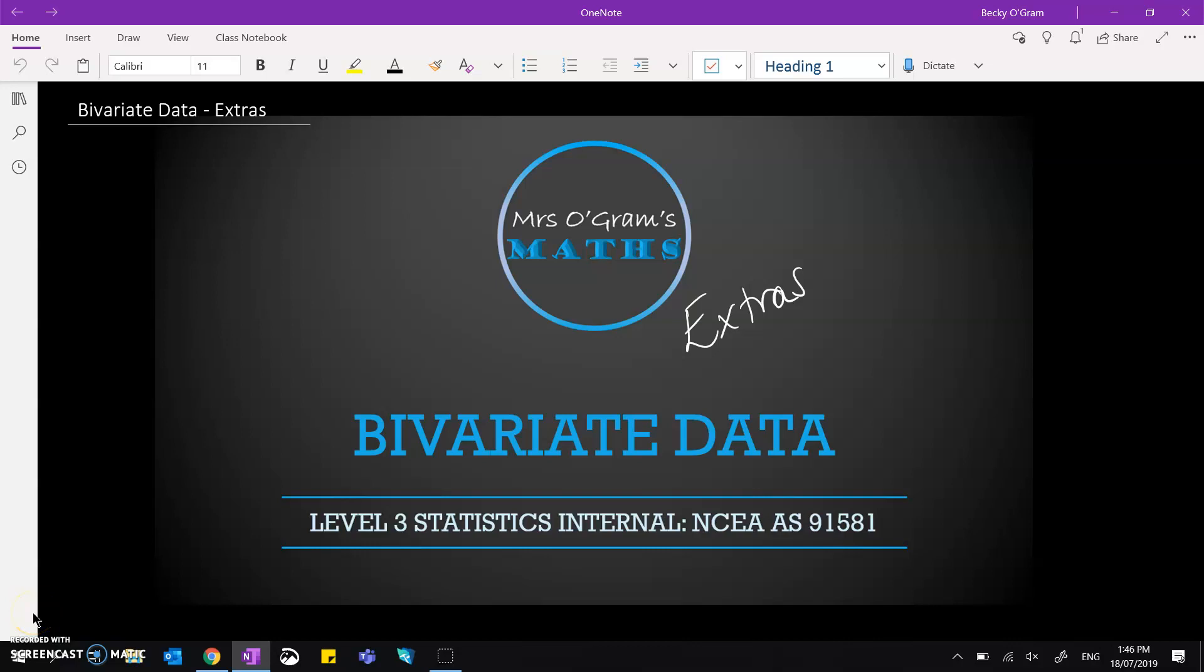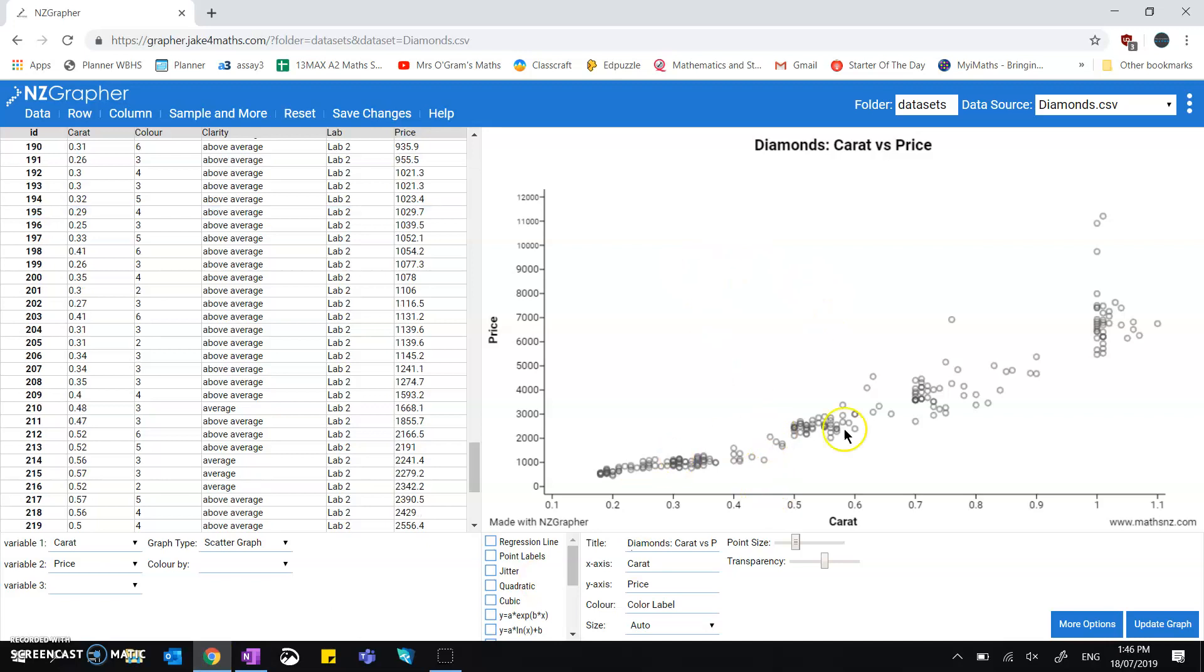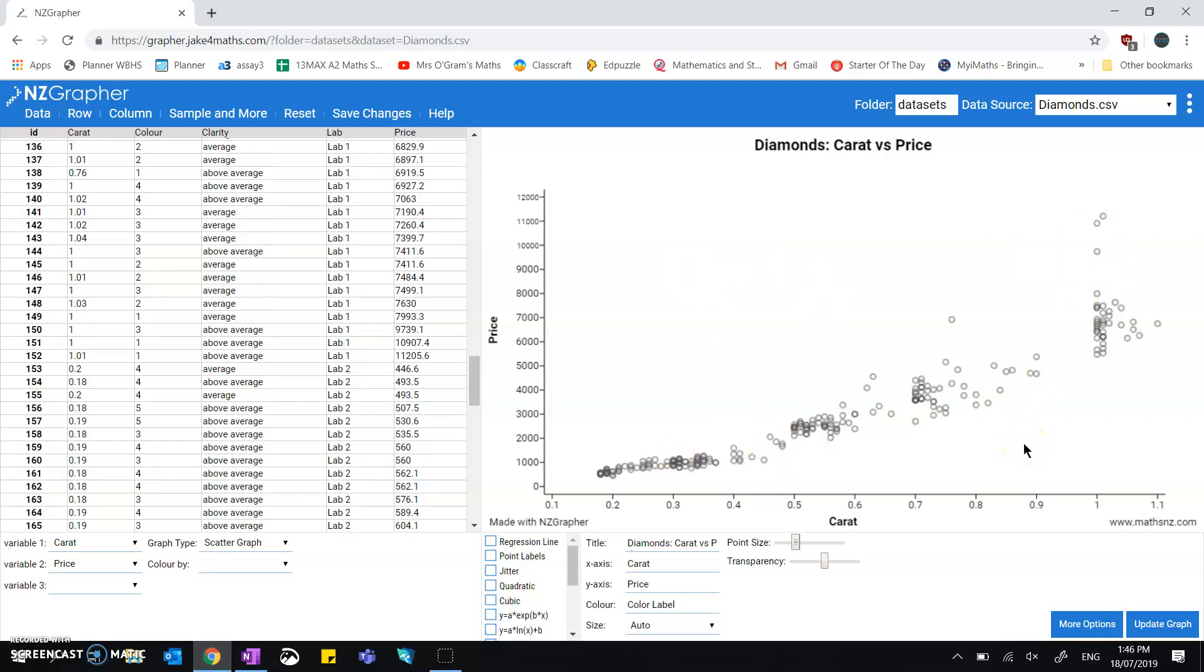We're going to carry on taking a look at the bivariate data product and some of the extra bits of detail that you can put in. In this video we're going to take a look at what's called residuals. So if we pop back over to NZ Grapher, we've got our data here put into NZ Grapher as you've seen before.